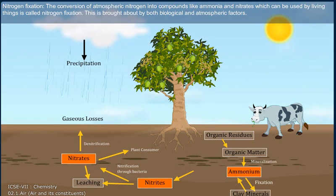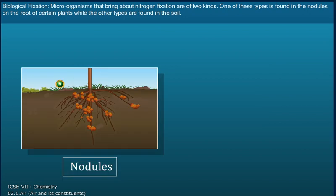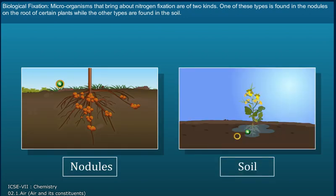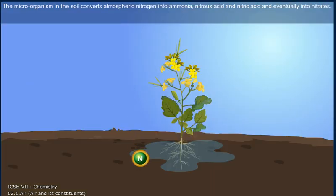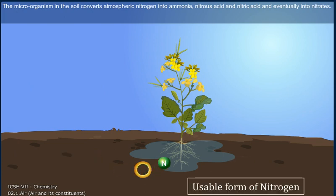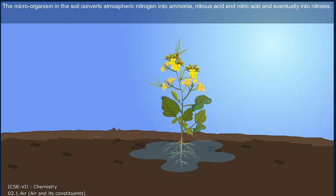Nitrogen fixation is brought about by both biological and atmospheric factors. Microorganisms that bring about biological nitrogen fixation are of two kinds. One type is found in the nodules on the roots of certain plants, while the other type is found in the soil. The microorganisms in the nodules absorb nitrogen from the air and convert it into nitrogen compounds. The microorganisms in the soil convert atmospheric nitrogen into ammonia, nitrous acid, nitric acid, and eventually into nitrates.